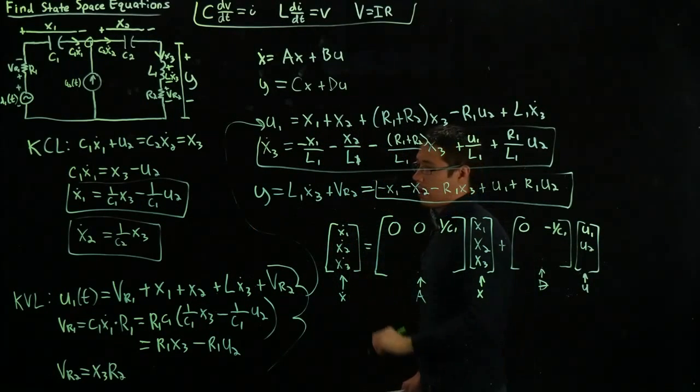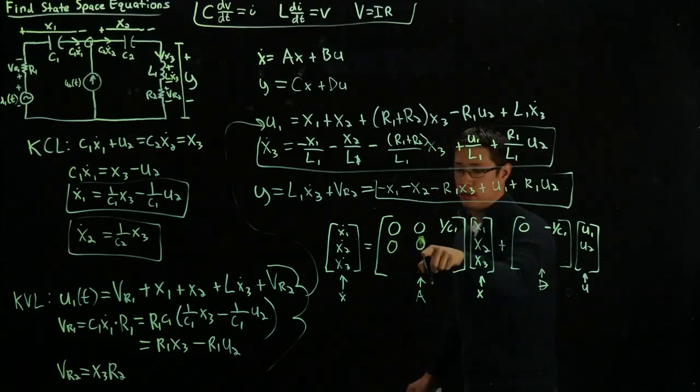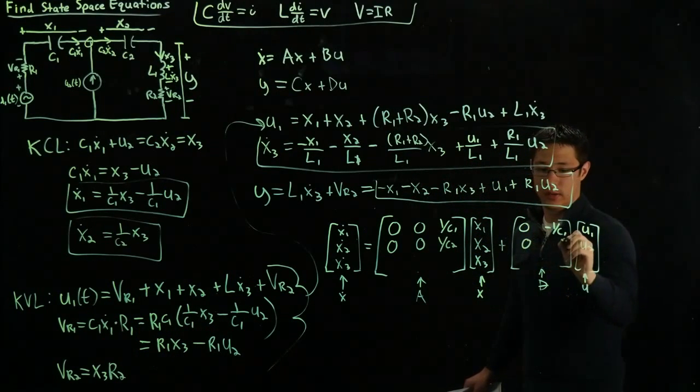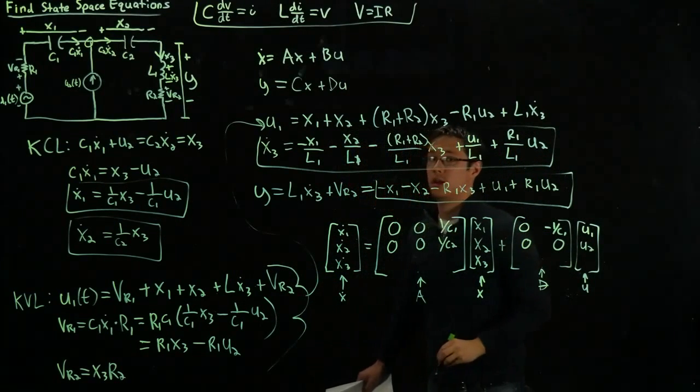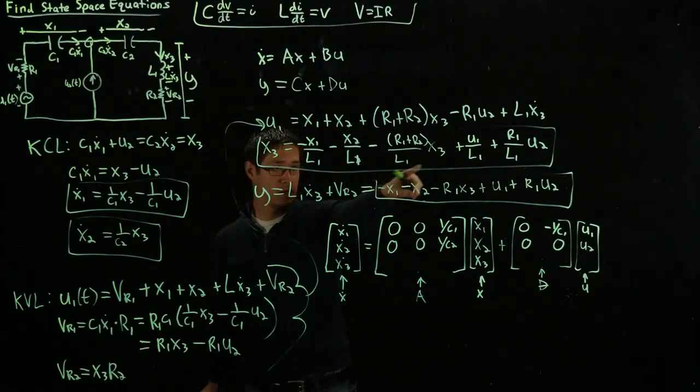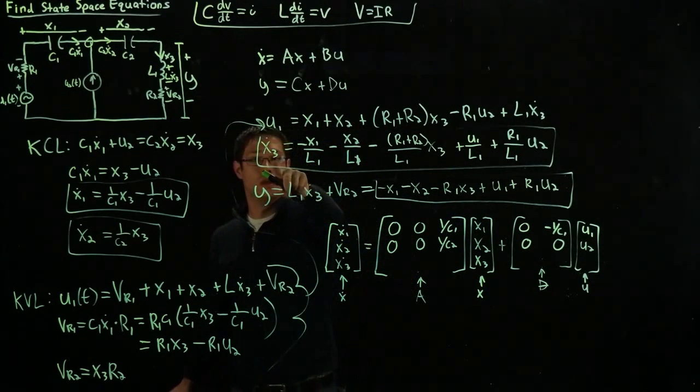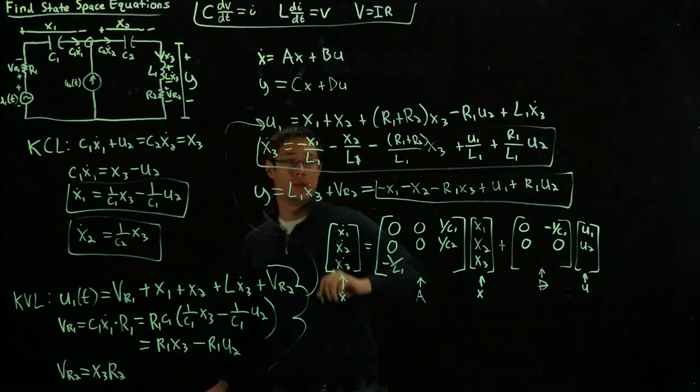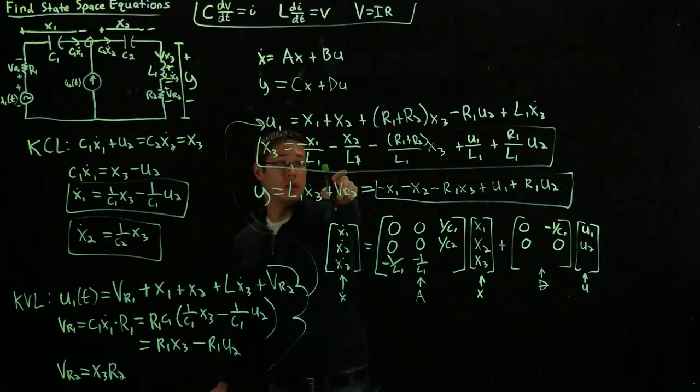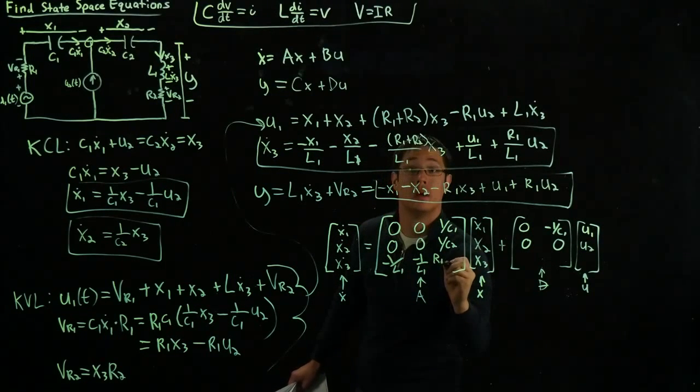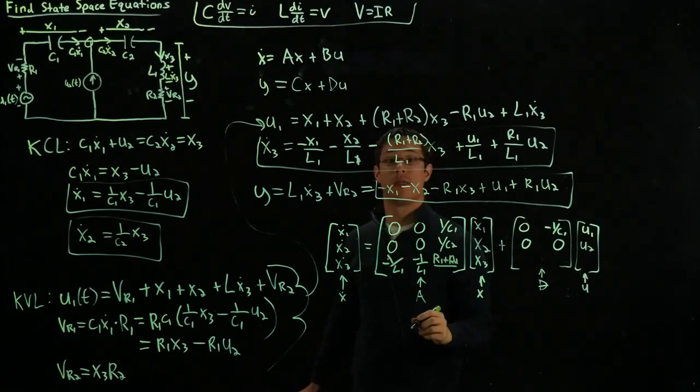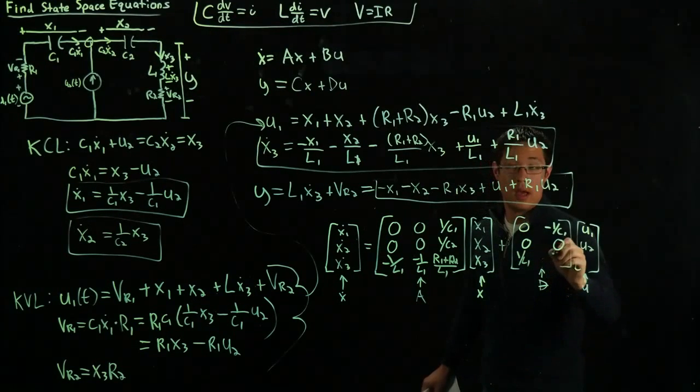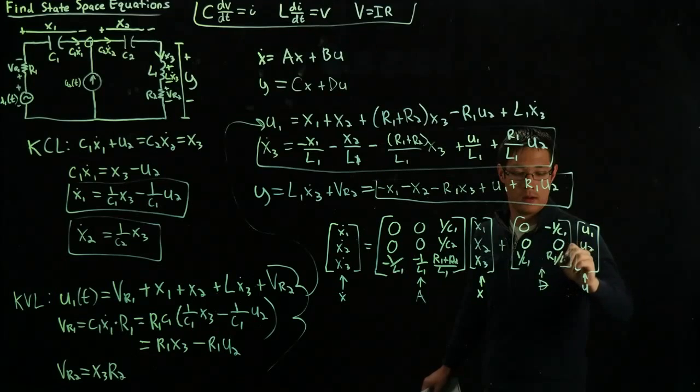We follow this procedure for the rest of the derivatives of the states. So x2 dot depends only on x3. So we can immediately write 0 for the x1 and x2 places, and 1 over C2 on the right side corresponding to x3, and 2 zeros over here because there are no inputs in this equation. Finally, we have our big x3 dot, which looks like it has a little of everything in it. x3 dot depends on x1 with coefficient minus 1 over L1. Next to x2 is minus 1 over L1. Next to x3 is minus (R1 plus R2) over L1. Finally, for our inputs, we have 1 over L1 and R1 over L1.